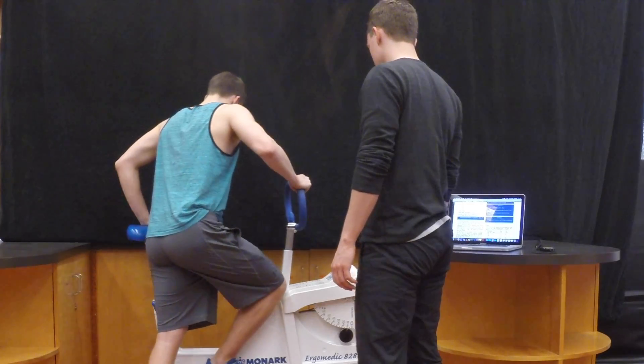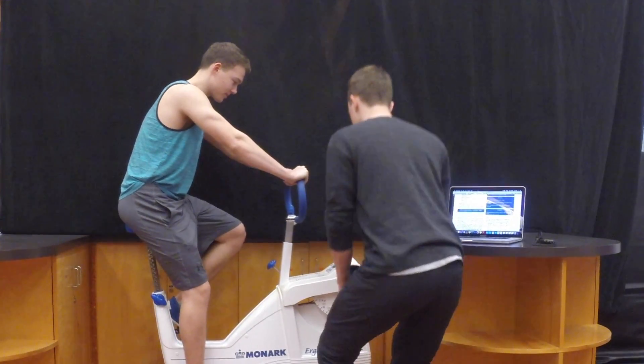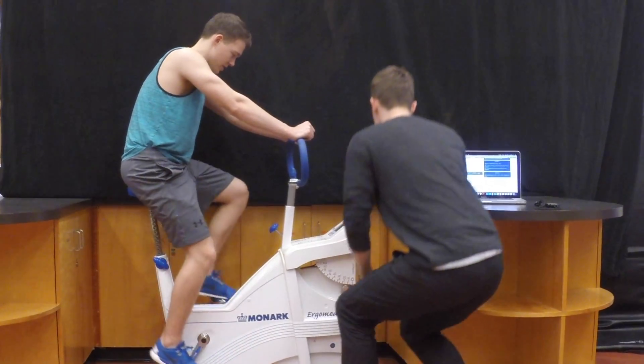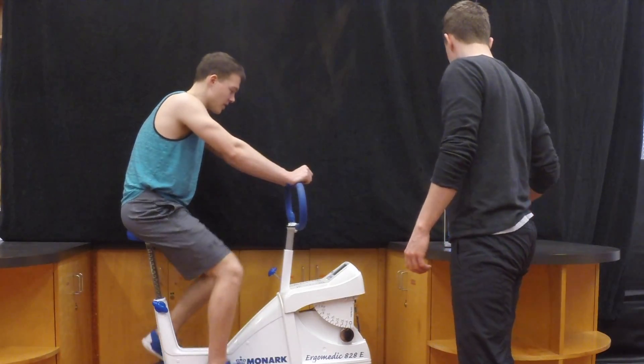Now let's start the test. Have the client jump on the bike, and get them to start pedaling at 50 RPMs. At the same time, set the ergometer workload to 0.5 kiloponds, and then press the start button on the stopwatch.